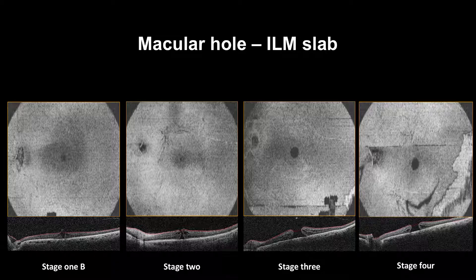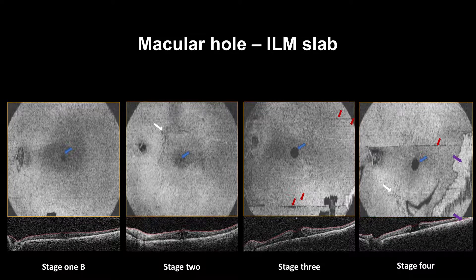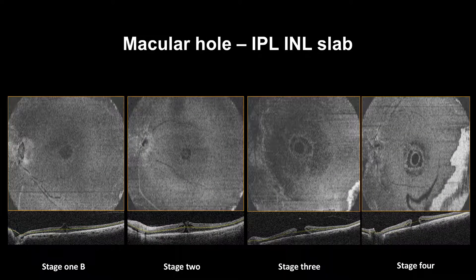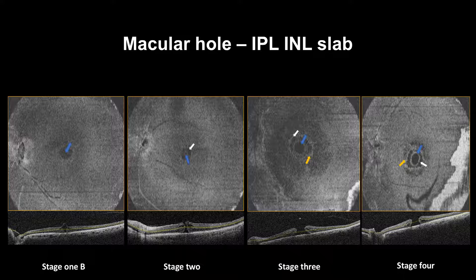In cases of full thickness macular hole, the ILM slab will show a hyporeflective circle that can appear in different sizes according to the hole size, resembling the hole, and can show the epiretinal membrane location or vitreous traction. Please note the blink and segmentation artifacts. The IPL-ILM slab may show a hyporeflective circle surrounded by a hyperreflective border and then surrounded by cystic changes, resembling the central full thickness macular hole and intraretinal cystic changes. The slab will show prominent irregular hyperreflective borders in stage 3 and 4.